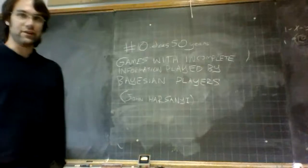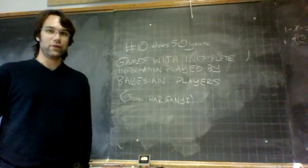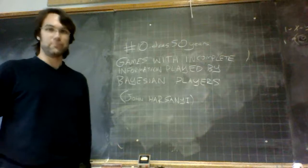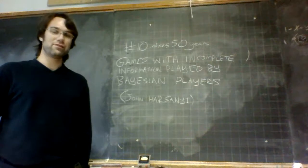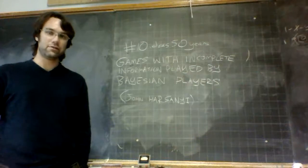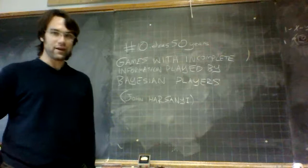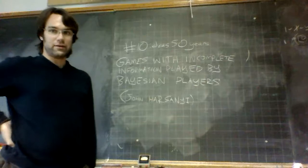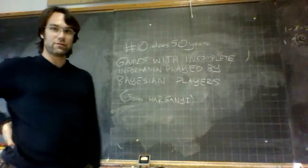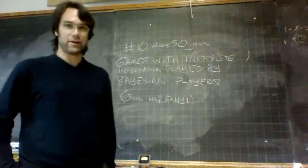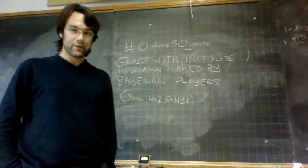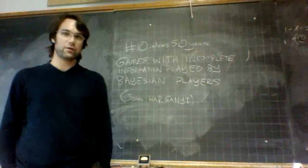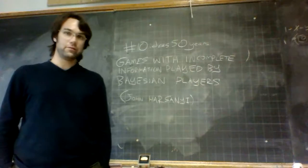A little bit on John Harsanyi before we get started. He won the equivalent of the Nobel Prize for Economics, along with John Nash, who you might know from the Beautiful Mind movie. This is not a small player in the field of game theory — he's one of the larger players. He's Hungarian, spent some time at Wayne State University in Detroit between 1961 and 1963, and eventually moved to Berkeley by 1964.